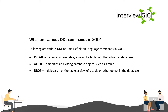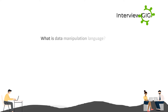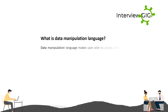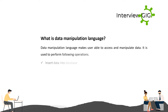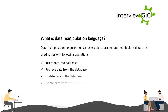What is Data Manipulation Language? DML makes the user able to access and manipulate data. It is used to perform the following operations: insert data into a database, retrieve data from the database, update data in the database, and delete data from the database.